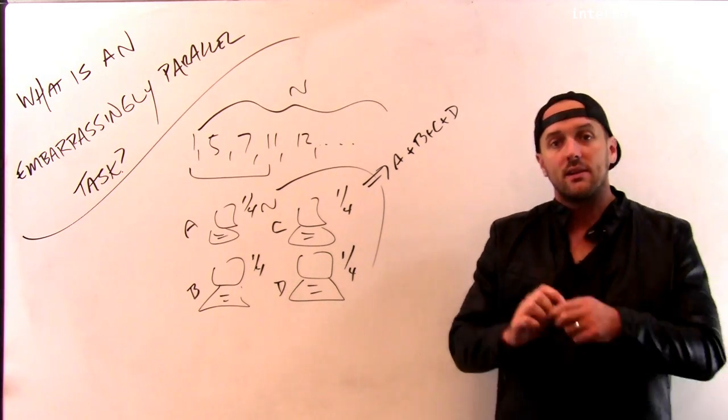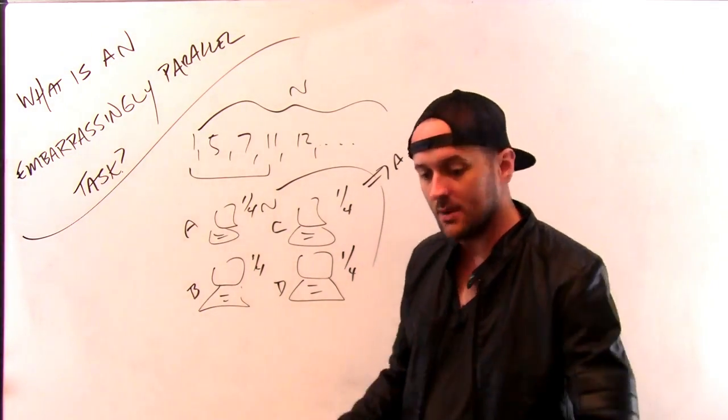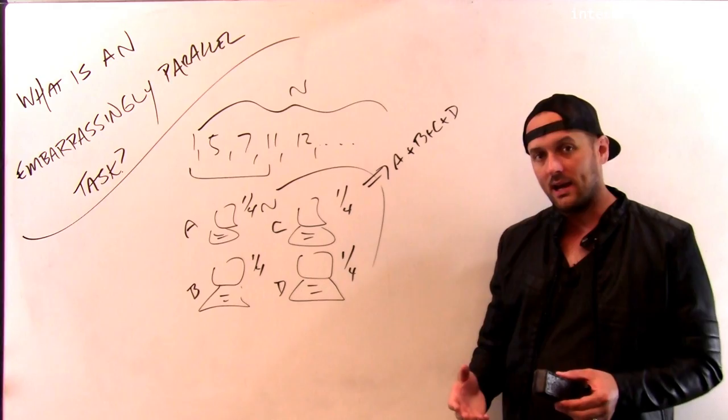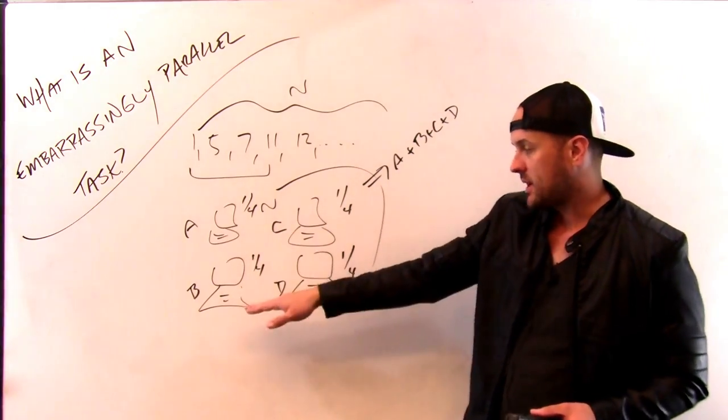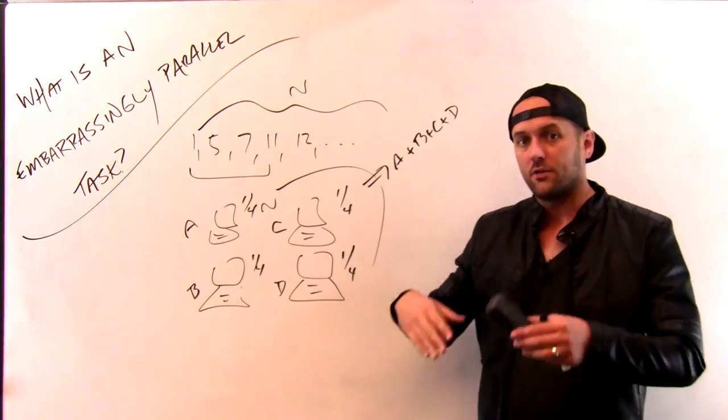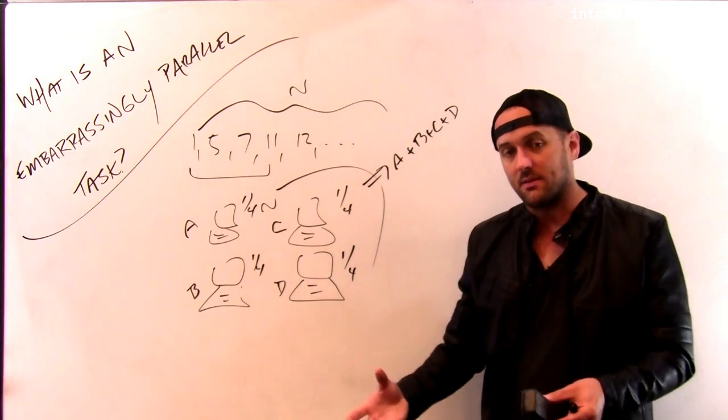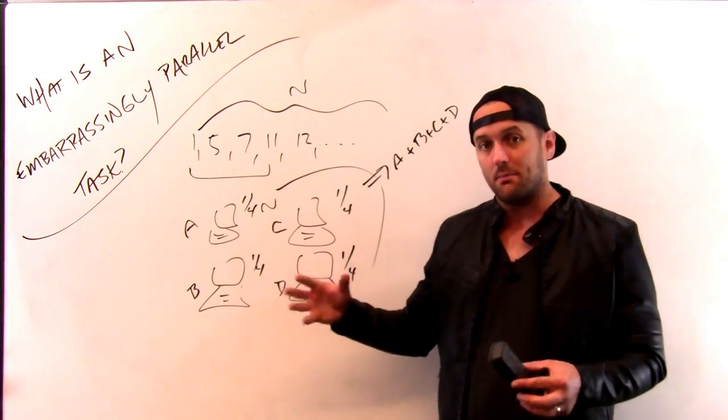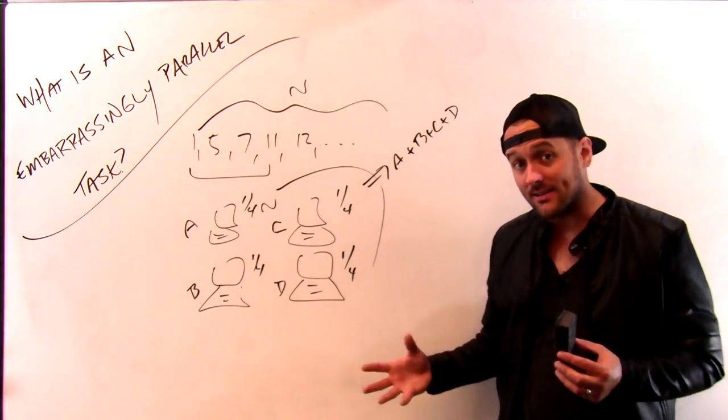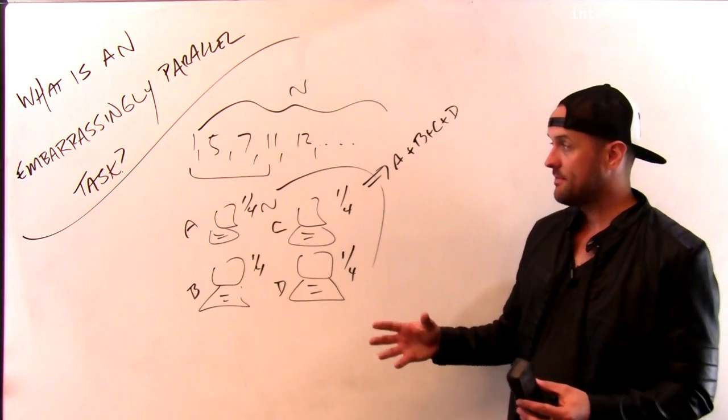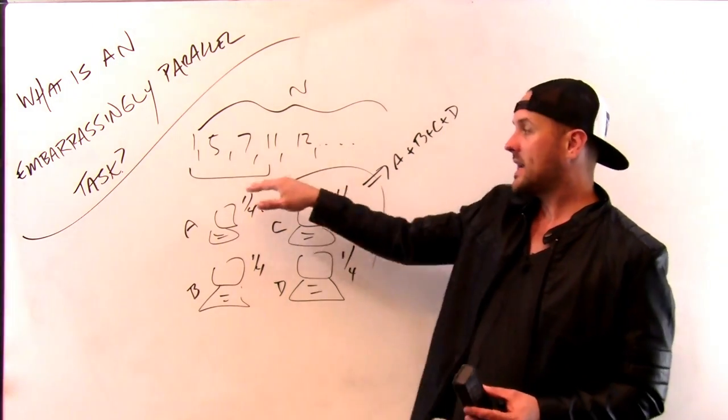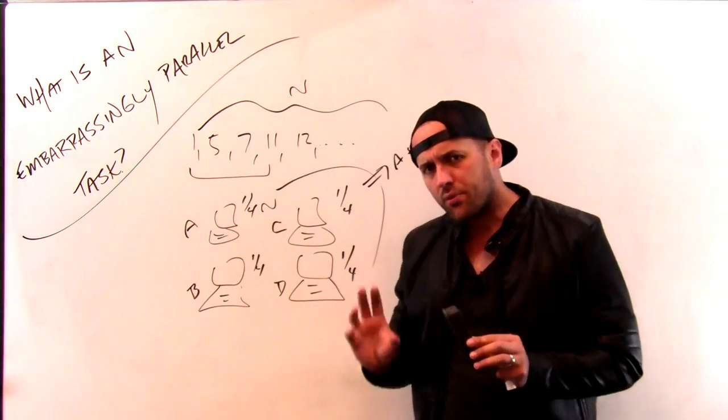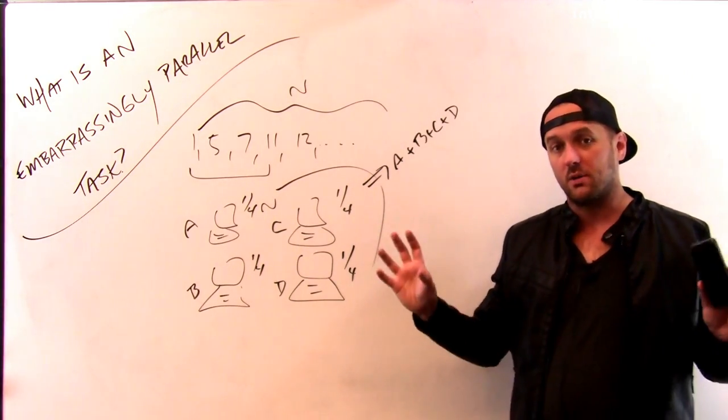Happily, search is another example of a type of problem that's pretty easy to split up among multiple machines, because when I'm looking for things online, I can split up the pages between the different machines. Those machines can find the contents of the page and build search indexes for that page. And then those indexes can be combined later. In fact, even combining the indexes can be done on multiple machines. So search and adding up large groups of numbers are examples of problems that are pretty easy to divide across multiple machines.